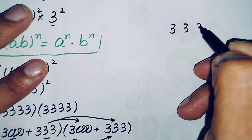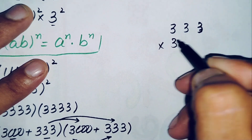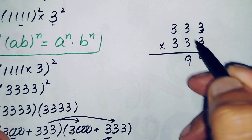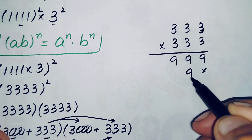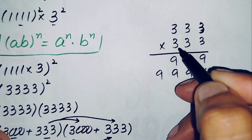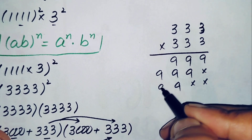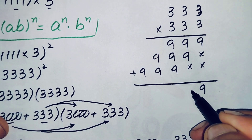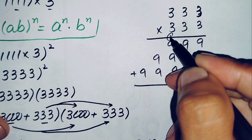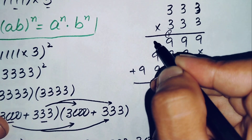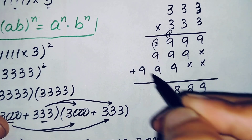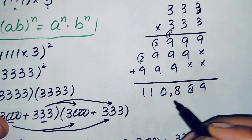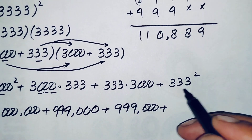For 333 squared, we multiply 333 times 333. 3 times 3 is 9, giving 999 in the first row; 9, 9, 9 shifted for the second digit; 9, 9, 9 shifted again for the third. Adding these three rows: the result is 110,889. So 333 squared equals 110,889.